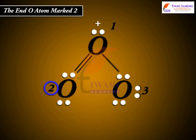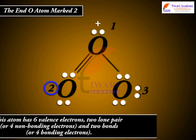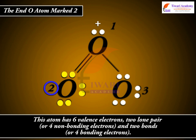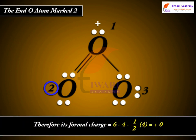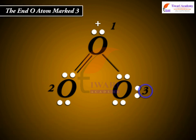The end O atom marked 2. This atom has six valence electrons, two lone pair or four non-bonding electrons, and two bonds or four bonding electrons. Therefore, its formal charge is equal to six minus four minus one by two into four is equal to plus zero.